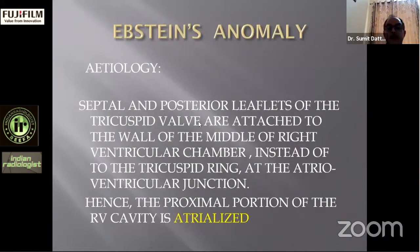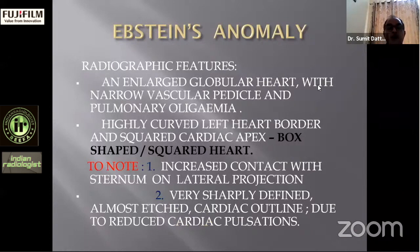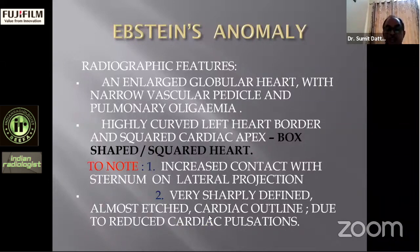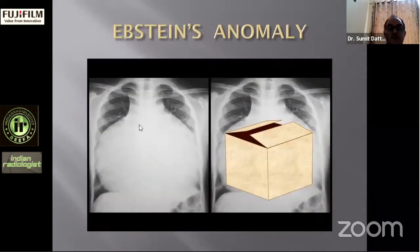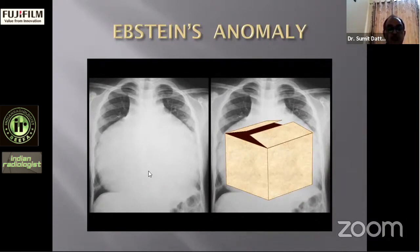In Ebstein's anomaly, the septal and posterior leaflets of the tricuspid valve are attached to the wall of the middle of the right ventricular chamber instead of the tricuspid ring at the atrioventricular junction; hence the proximal portion of the right cavity is atrialized. Radiographically, there is an enlarged globular heart with narrow vascular pedicle, pulmonary oligemia, a high curved left heart border, and a squared apex — producing a box-shaped or squared heart. In lateral projection there is increased contact with the sternum and a sharply defined, almost etched cardiac outline due to reduced cardiac pulsation.